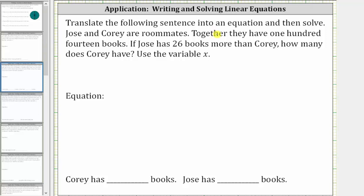We are asked to translate the following sentence into an equation and then solve. Jose and Corey are roommates. Together they have 114 books. If Jose has 26 more books than Corey, how many does Corey have? We're told to use the variable x.